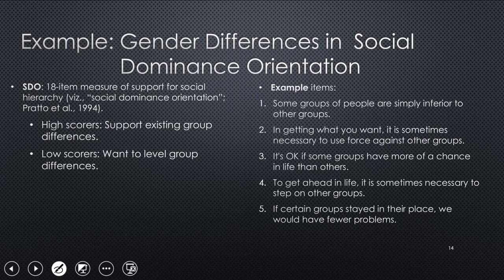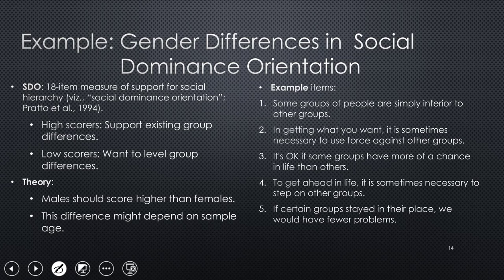So there are 18 items in there. High scorers are supporting existing group differences. They're trying to make them even sharper. And low scorers want to level group differences. The theory is males should score higher than females. I've already given you the answer to that. That's typically what happens. So let's imagine we make another hypothesis that it depends on sample age. Maybe little kids are more naive than adults. Maybe they're not into dominance as much as adults are. So maybe it's a developmental thing.